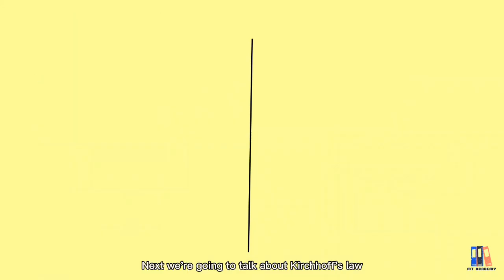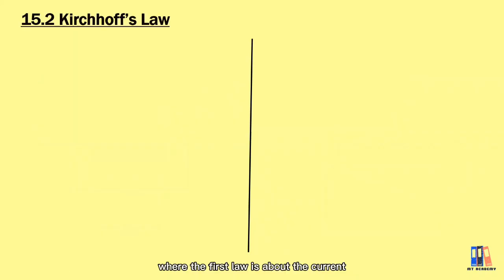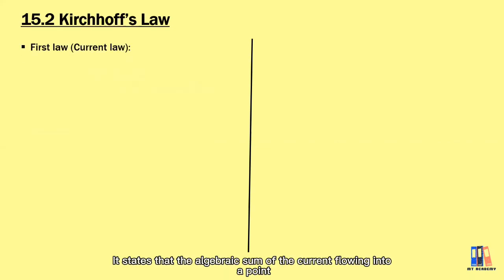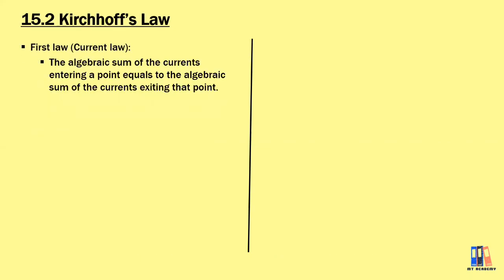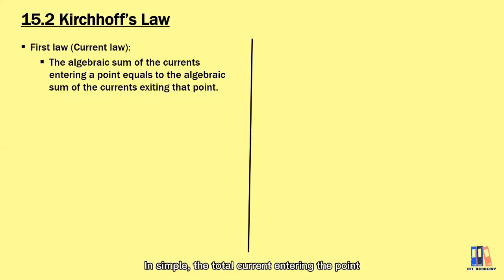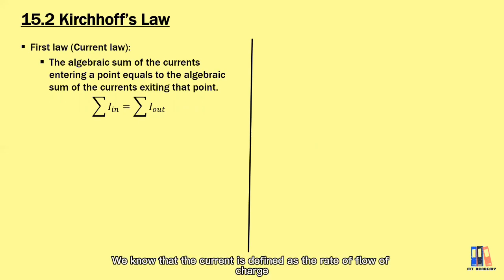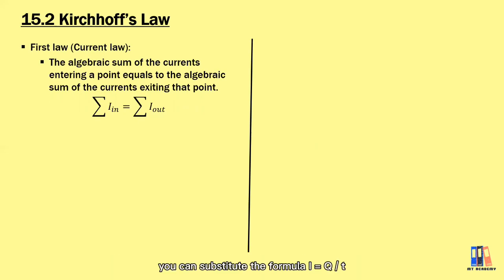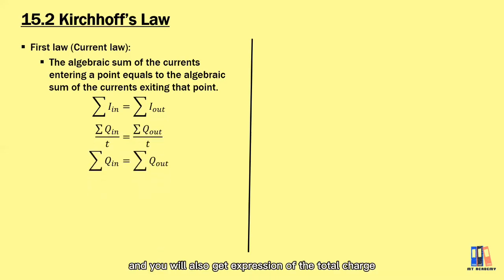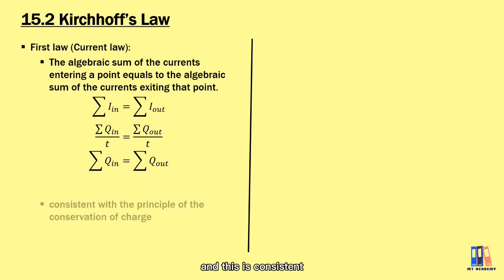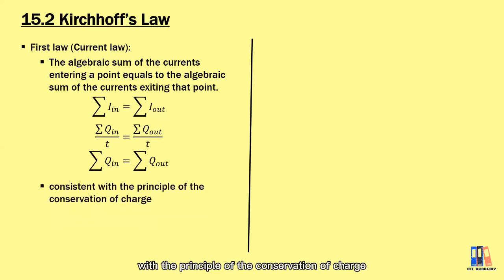Next, we're going to talk about Kirchhoff's law, where the first law is about current. It states that the algebraic sum of the current flowing into a point equals the algebraic sum of the current flowing out from that point — in simple terms, total current entering equals total current exiting. Since current is defined as the rate of flow of charge, I = Q/t, this is consistent with the principle of conservation of charge.